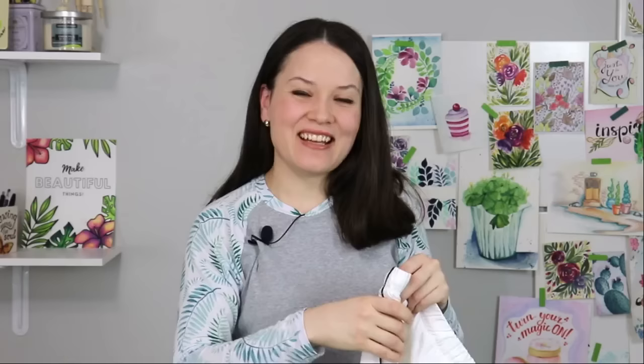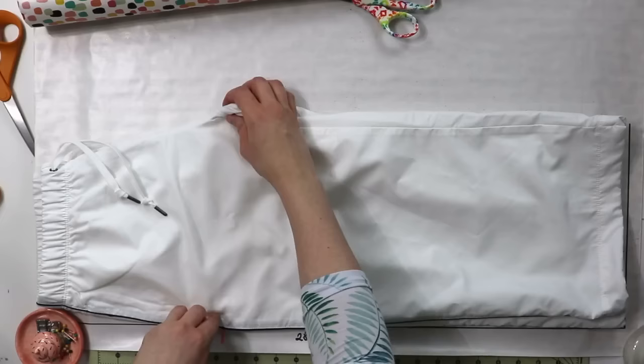Now the reason why I'm taking all the measurements with the right side out of the pants is because on the inside I have this lining which makes it really difficult for me to see any seams whatsoever.